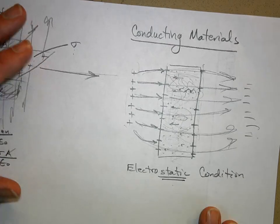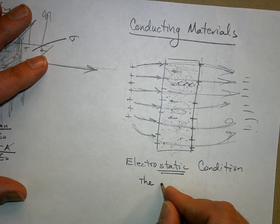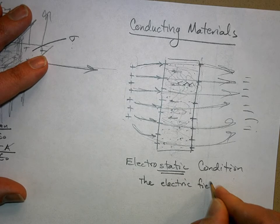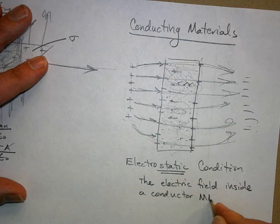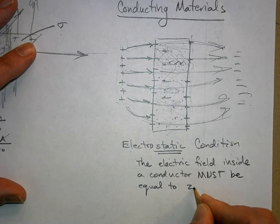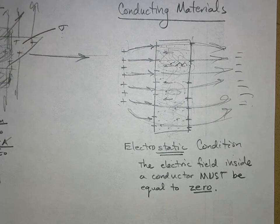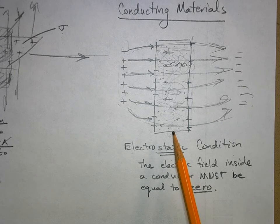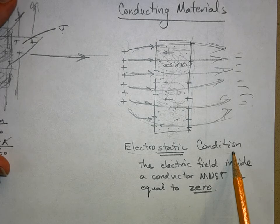Here's a big idea: if you have an electrostatic condition, the electric field inside a conductor is zero. Because if you did have an electric field inside the conducting material, it would force valence electrons to flow. If you have flowing charge, we call that a current, and if you have a current, you don't have an electrostatic condition. So if you have an electrostatic condition, there must be no electric field inside.